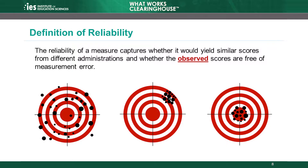Outcome measures must also have a high degree of reliability to meet WWC requirements. The reliability of a measure captures whether it would yield consistent scores from different administrations. A highly reliable measure indicates that the observed scores have low measurement error. For example, a reliable measure will return similar results if a study gives the same assessment to the same group of students repeatedly.